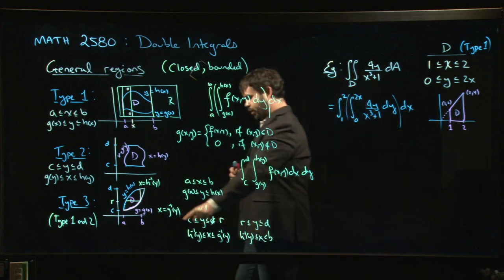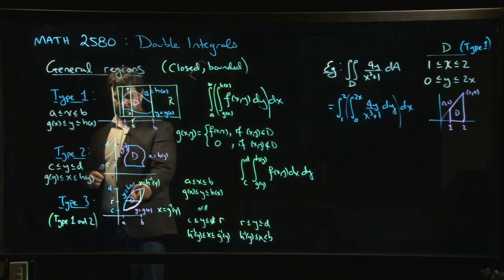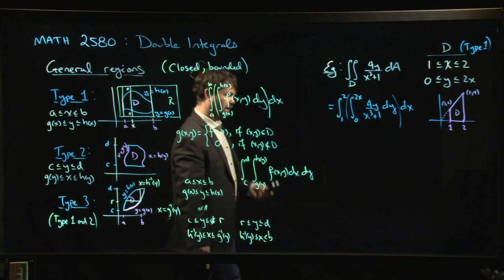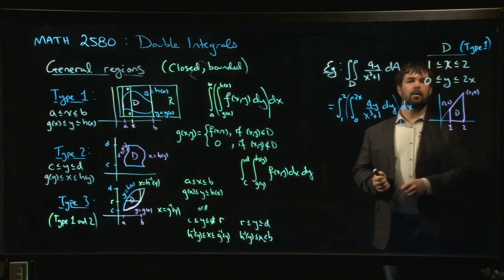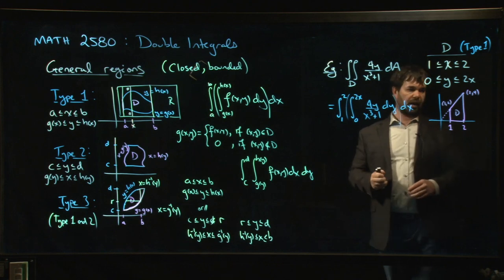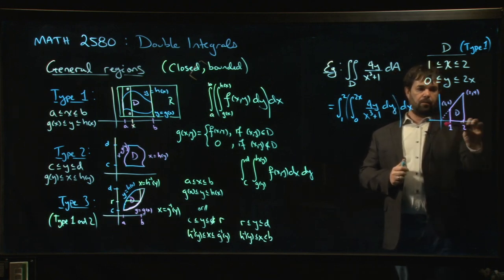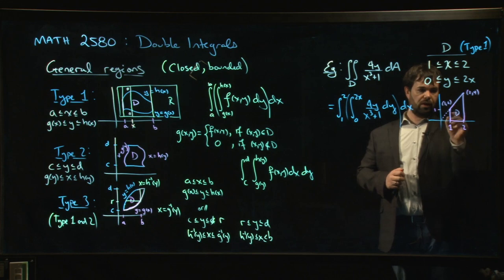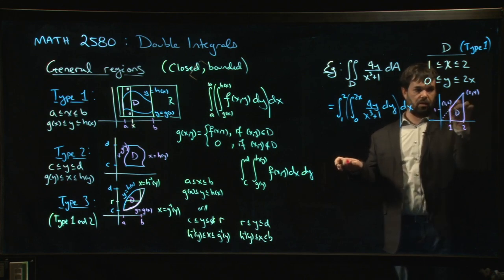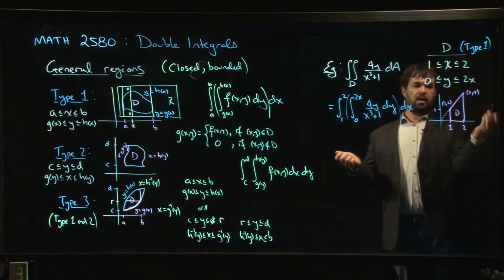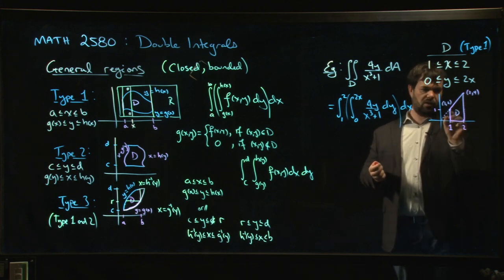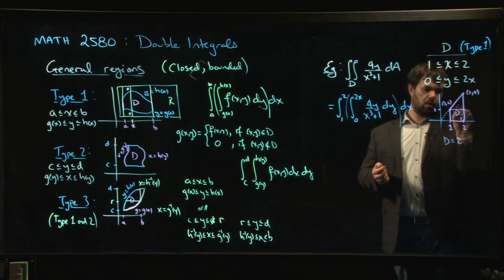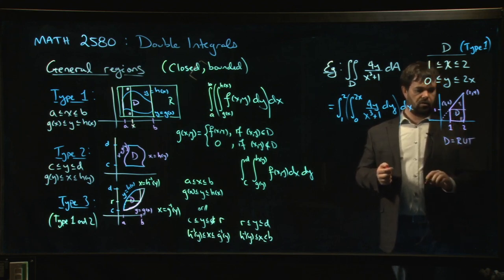If your region has this trapezoidal shape, you saw the difficulty we ran into in the last video trying to set this up where y goes between constant values and x depends on y. If you wanted to integrate first with respect to x, you'd have to take a lot more care. When y is between 0 and 1, x would just run from 1 to 2—there's a rectangle there. So we could think of this as a rectangle plus a triangle. We could think of D as the union of this rectangle R down here and a triangle T.